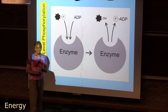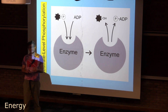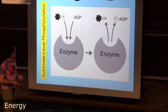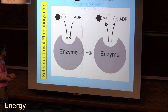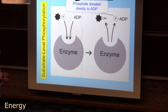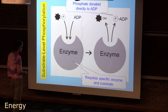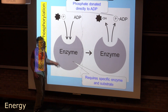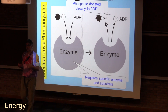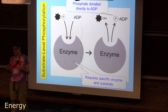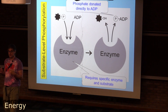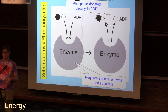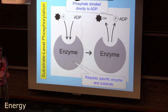Substrate level phosphorylation is seen twice in glycolysis and then once again in the Krebs citric acid cycle. It requires specific enzymes, so it's a relatively limited reaction in what it can do, because there are only so many types of enzymes out there.